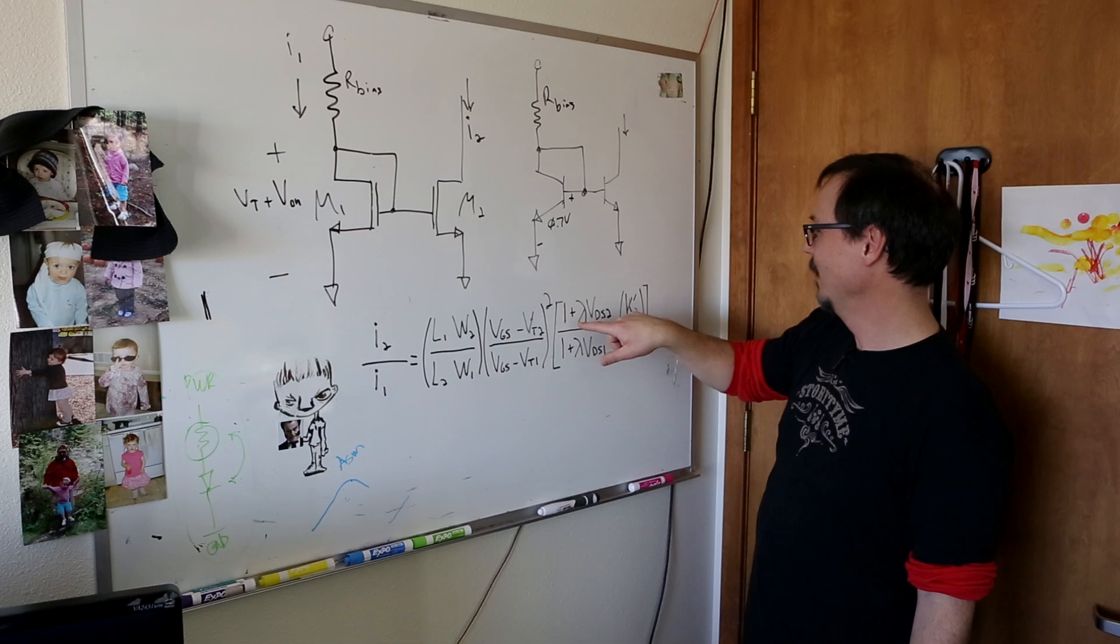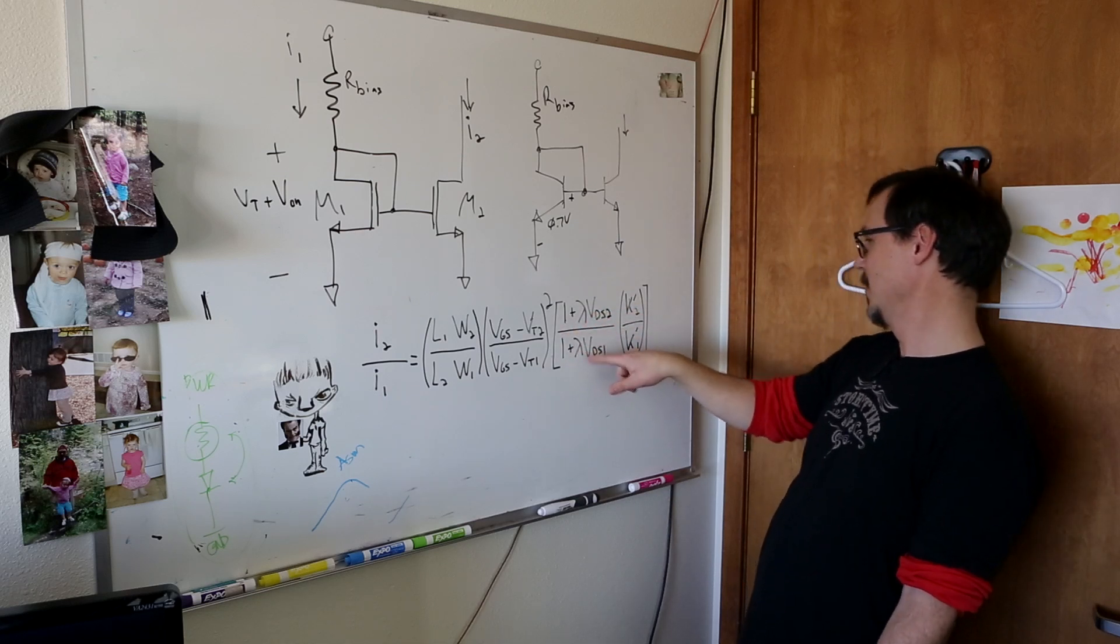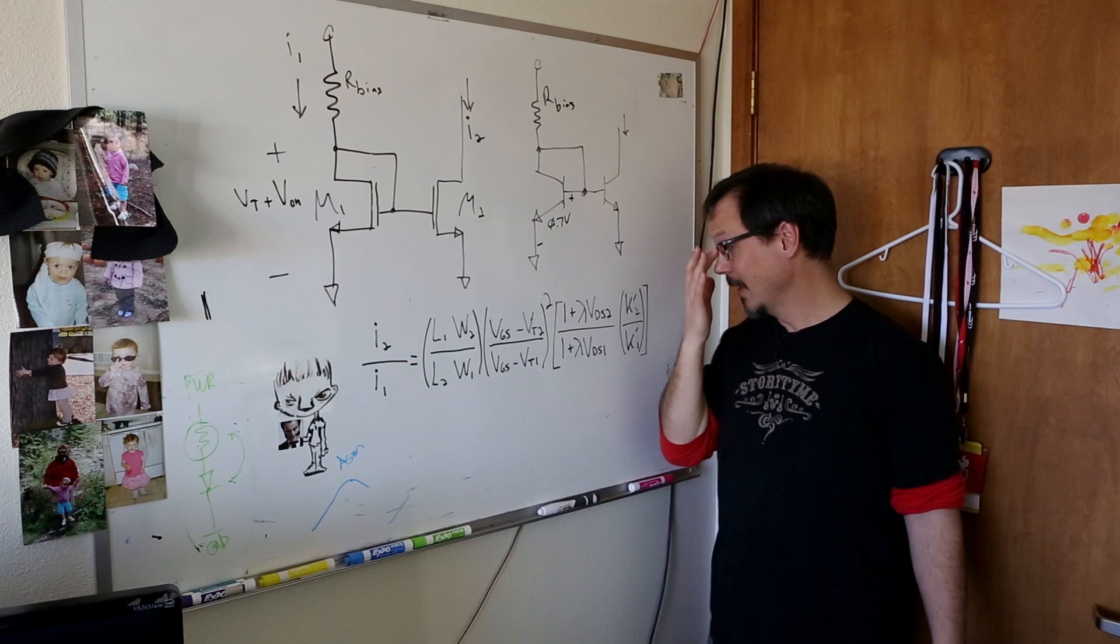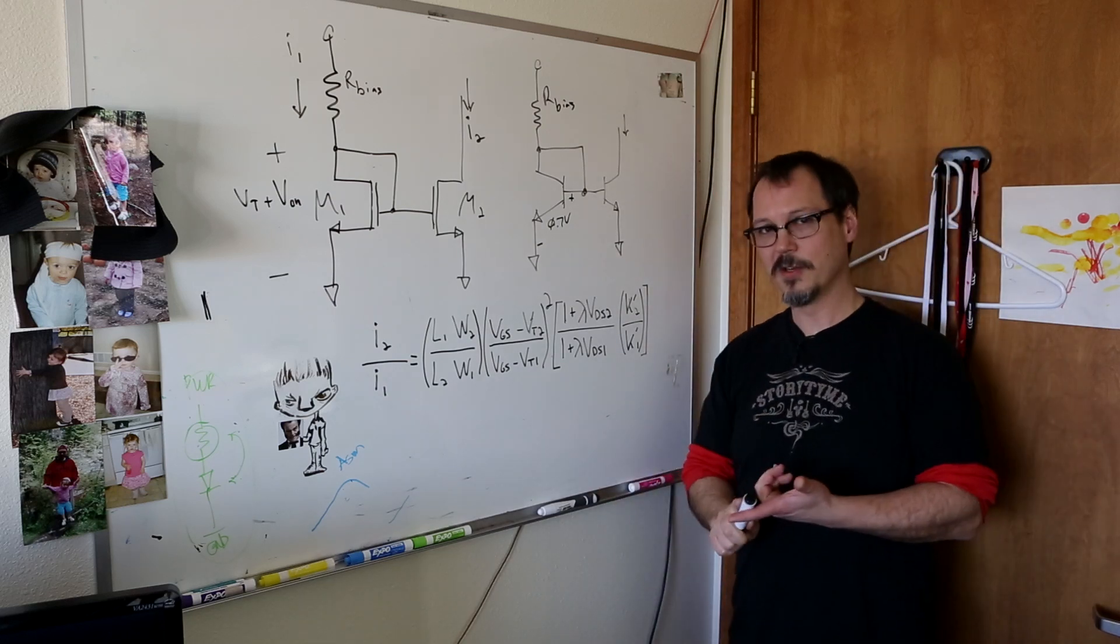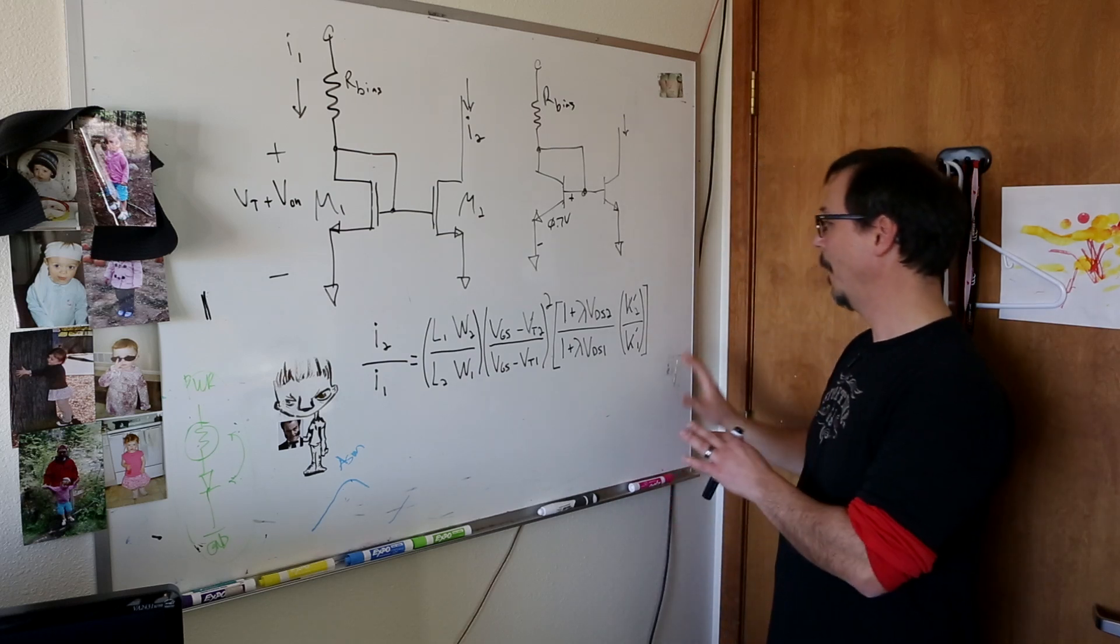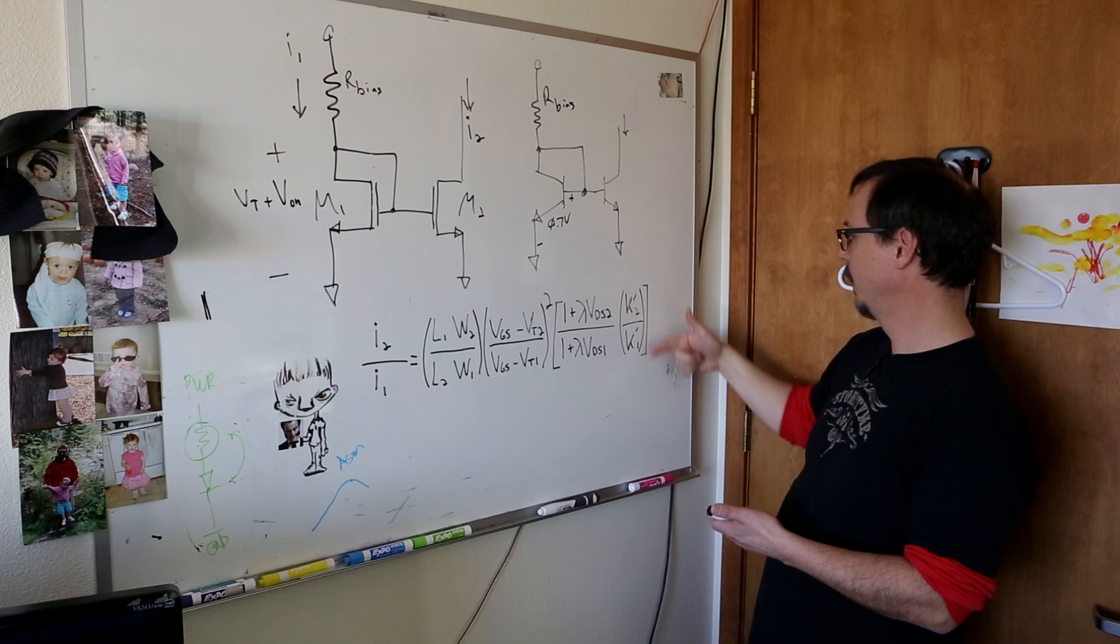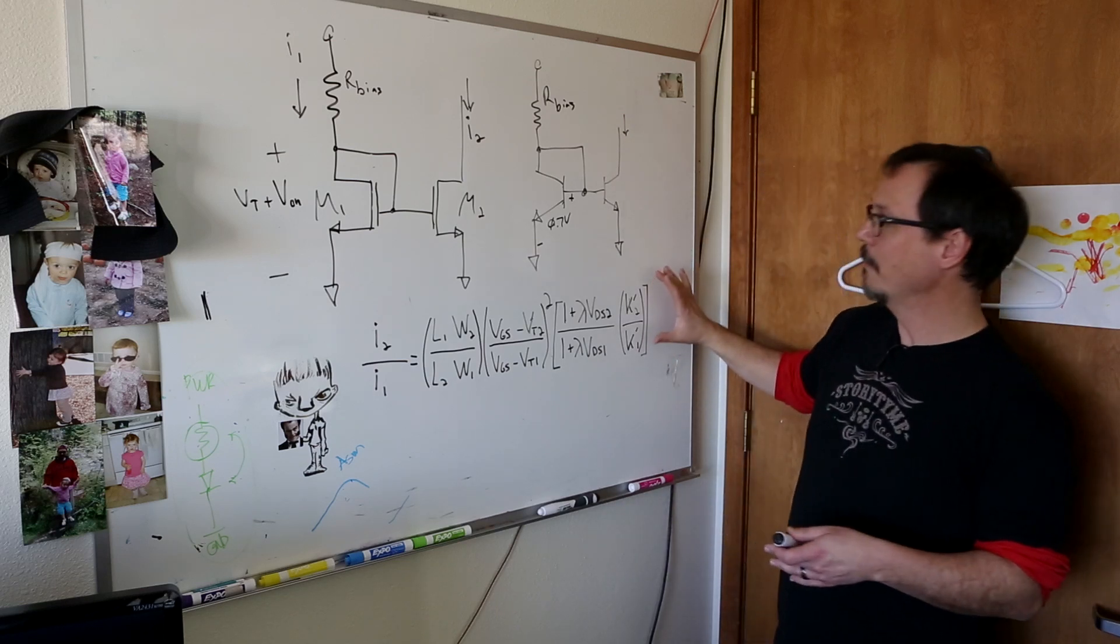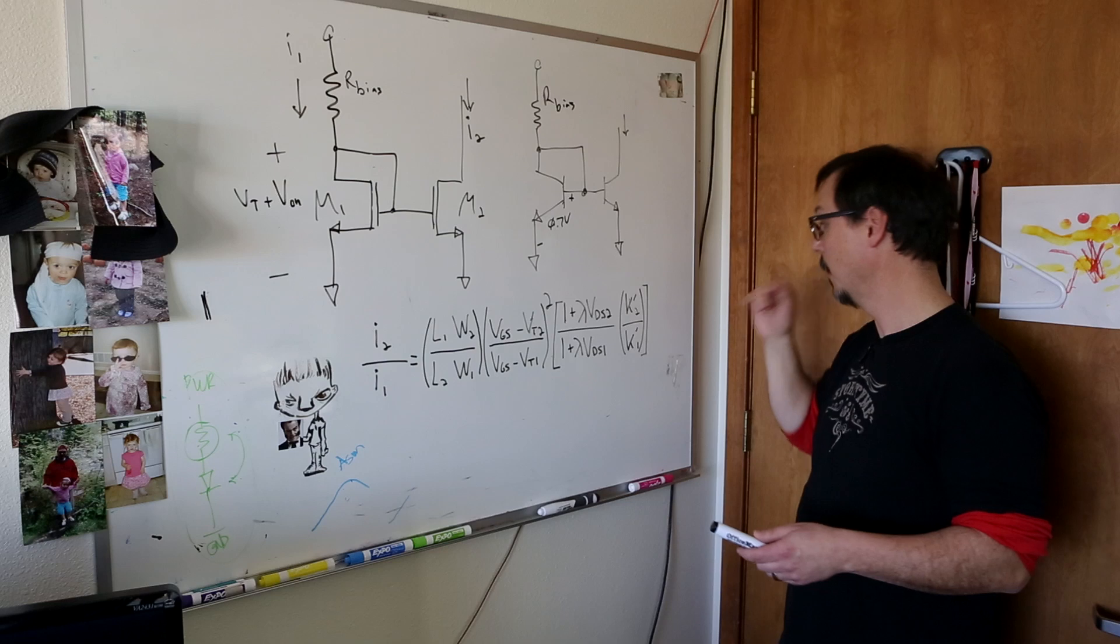Times this quantity, which is one plus lambda VDS2 over one plus lambda VDS1. Lambda is a channel modulation parameter. It has to do with how much current is going through it. It has to do with temperature. And then there's times K prime 2 over K prime 1. And K prime is a transconductance parameter of the device.